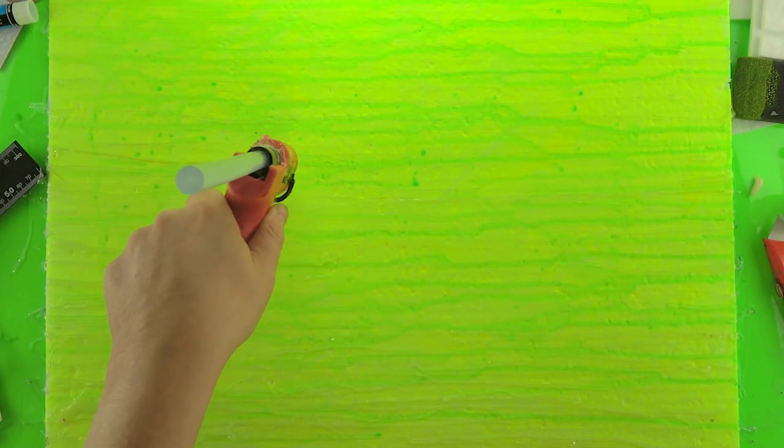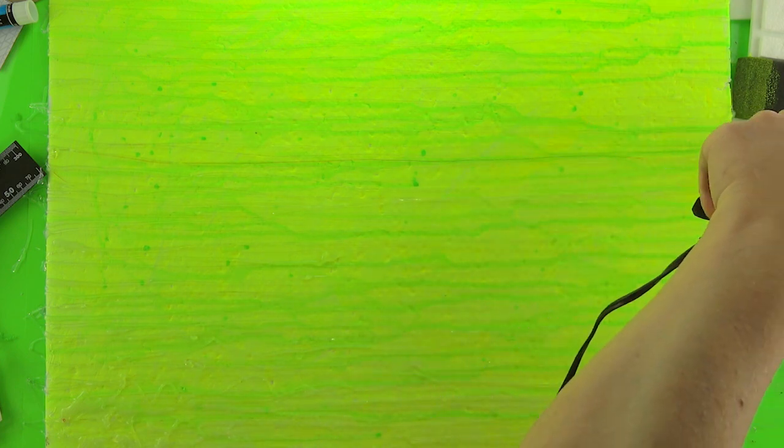Once all that's dry, I'm going to add some lines of hot glue to kind of give it a little bit of dimension, to give it some depth and some translucency.